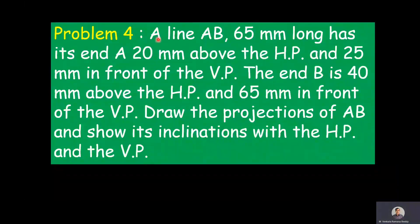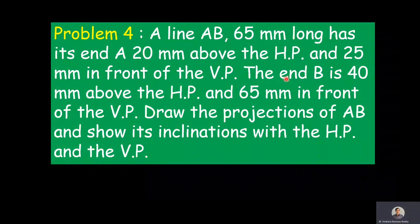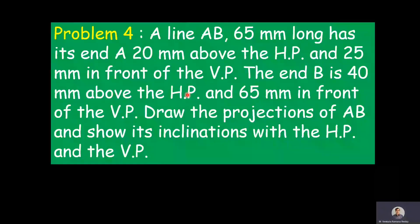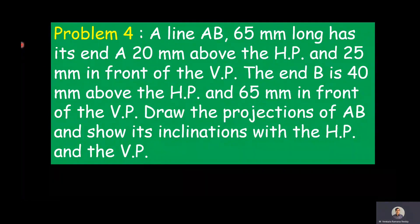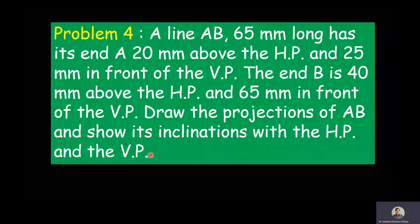The given problem is: a line AB 65 mm long has its end A 20 mm above HP and 25 mm in front of the VP. The end B is 40 mm above the HP and 65 mm in front of the VP. Draw the projections of AB and show its inclinations with the HP and the VP.